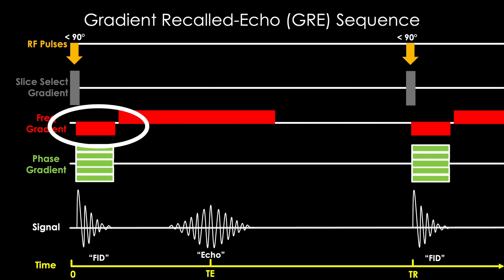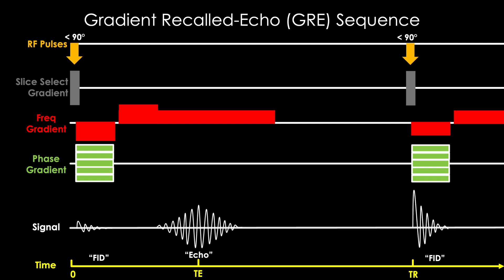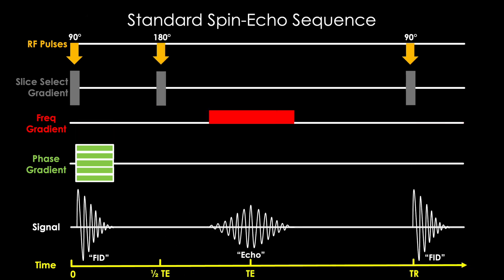And now that we've realized we have some control over this dephasing that occurs with gradients, let's go back to our spin echo sequence and see if it can be improved. We now know all these gradient fields will cause dephasing within the slice. The phase encoding gradient, the frequency encoding gradient, and even the slice select gradient. And this will degrade our signal and image. Is there anything we can do to reverse the damage we've done with these?